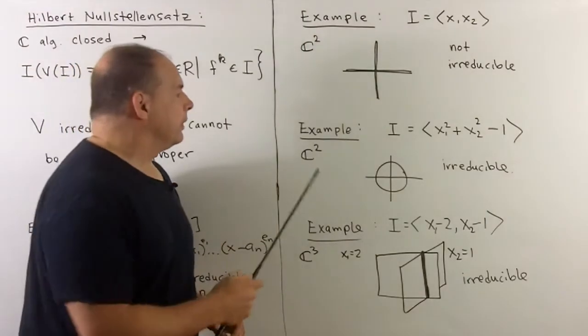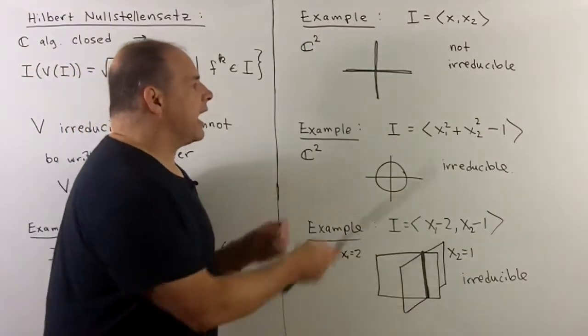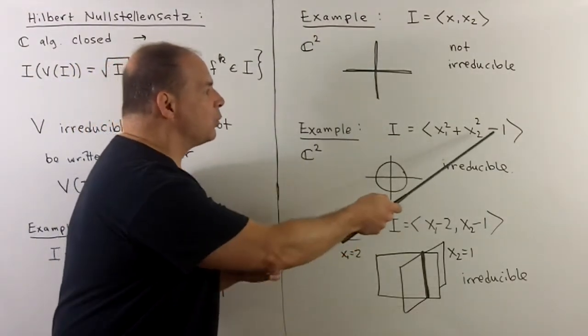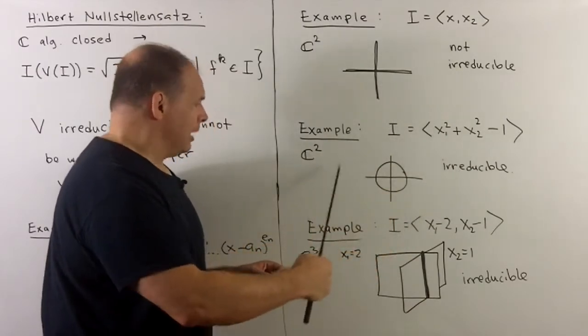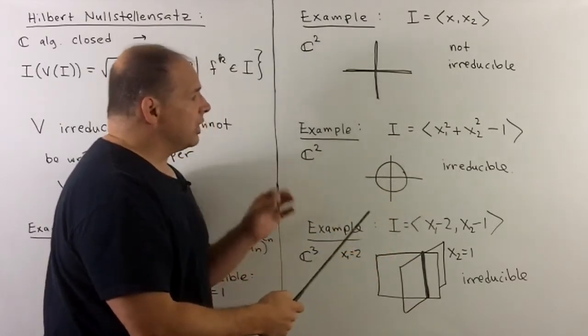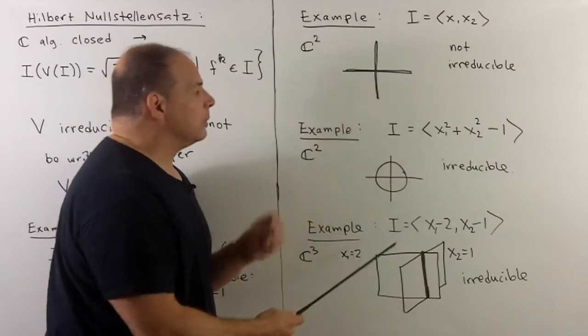Another example, again in C2, we could take X1 squared plus X2 squared minus one. If I set that equal to zero, the intersection with the real coordinates is just going to give us the unit circle, and this will be irreducible.